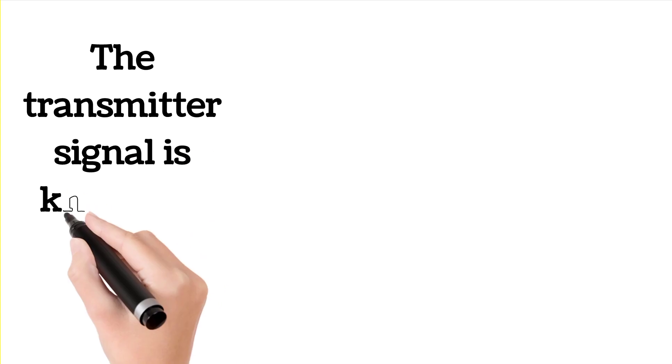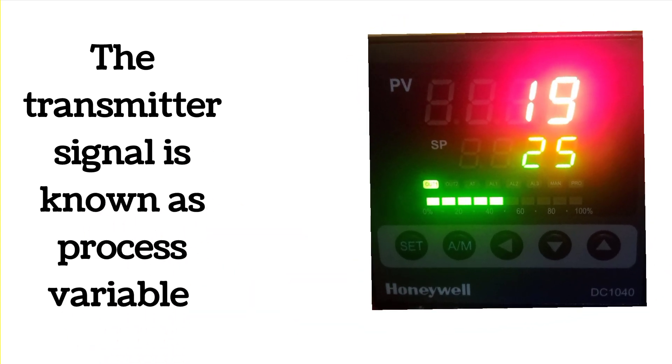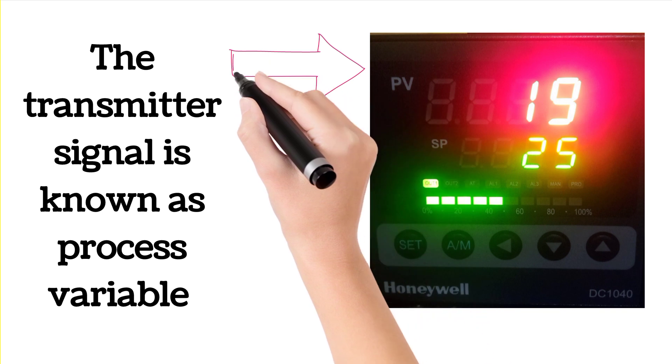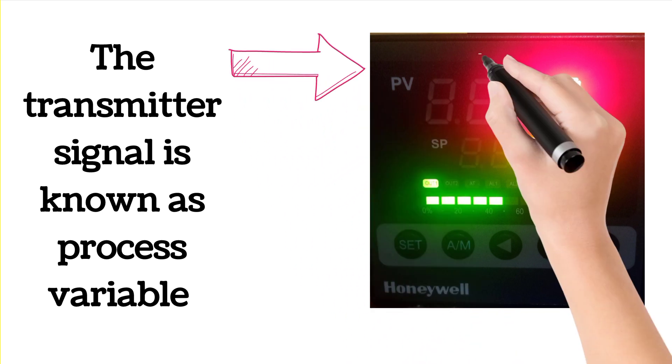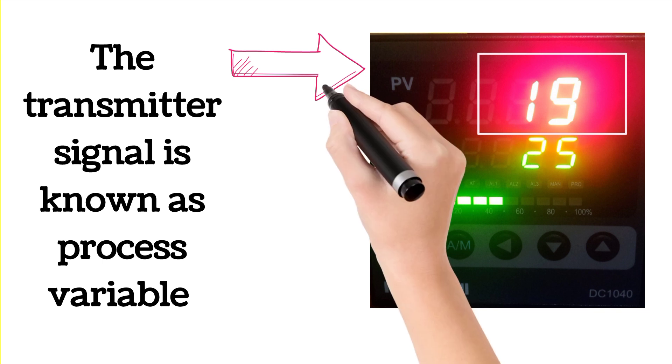Transmitter signal is known as process variable. Process variable is shown by the arrow. For more clear understanding, we make a rectangle and this rectangle shows that transmitter signal or process variable is 19 kg per centimeter square.